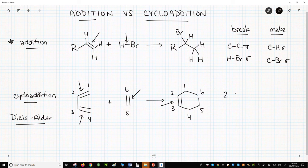So we've broken – we've lost two C-C pi bonds. If you count up all the sigma bonds, you'll find there are two new ones.